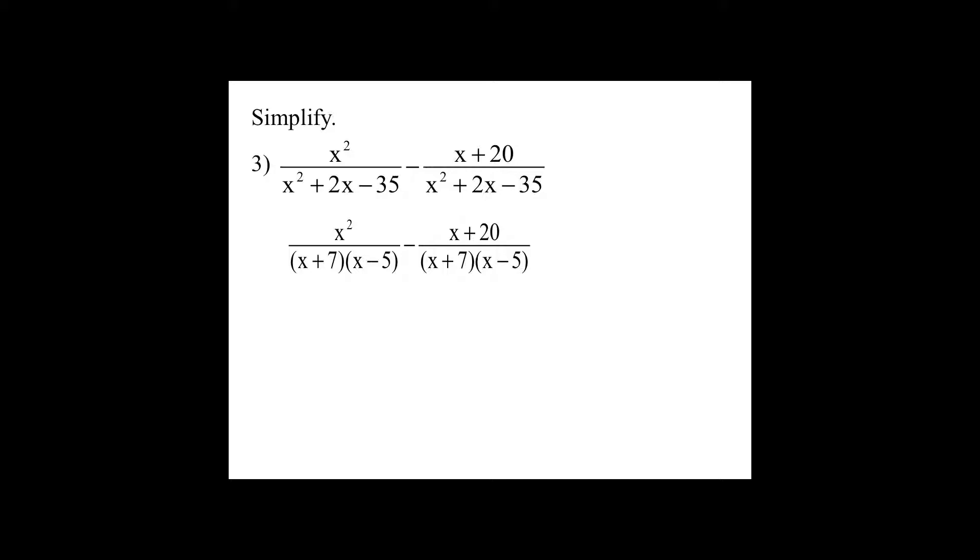Now I have to combine, distribute that negative to everything in the numerator to the right of that minus sign. And I get x squared minus x minus 20. Now, in order to simplify this I'm going to have to factor that trinomial.